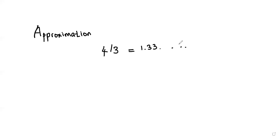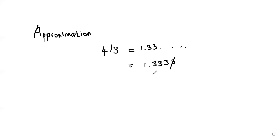So what the calculator will do is approximate the number. Let's say it approximates to four digits, giving us 1.333. The rule is: we look at the fifth digit — if that fifth digit is less than five, we cut it off and keep the four digits. So the fifth digit here is three, which is less than five, and we are left with 1.333. The calculator stores only this number.